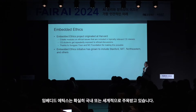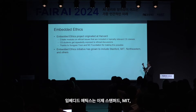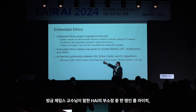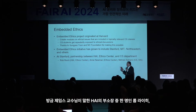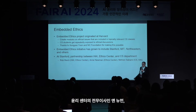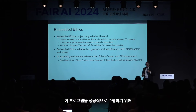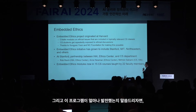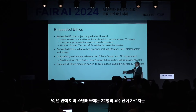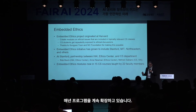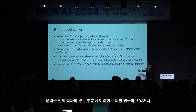Embedded ethics now exists at places including Stanford, MIT, Northeastern, and others. It's a partnership across multiple parts of the university—the Human Centered AI Institute, Rob Reich as associate director, Ann Newman as executive director of the Ethics Center, and myself from the CS department. There are already 15 CS classes at Stanford taught by 22 different faculty containing embedded ethics modules, and we continue to grow the program every year. This represents a large fraction of our entire department working on these topics.